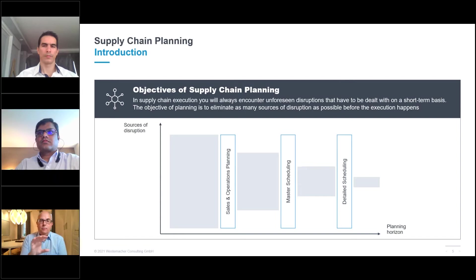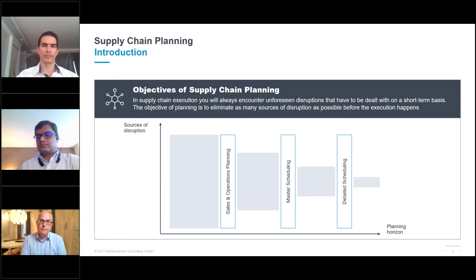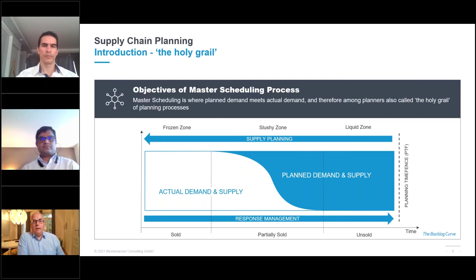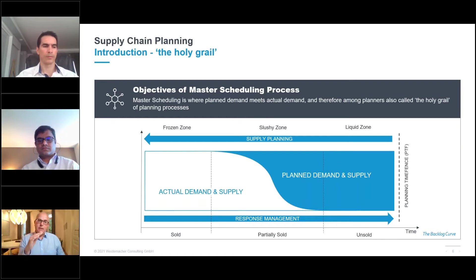As you go through your different planning horizons, you need to eliminate problems so that when you get to execution, the only disruptions you deal with are things like someone being ill or asking for overtime. Master scheduling is really what we call the holy grail — this is where planned demand and supply from S&OP start mixing with actual demand and actual production.